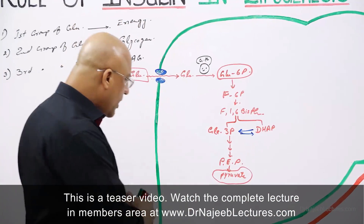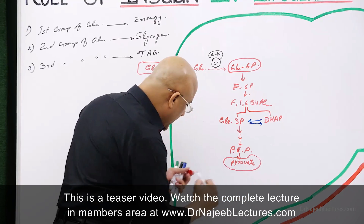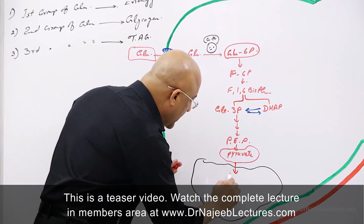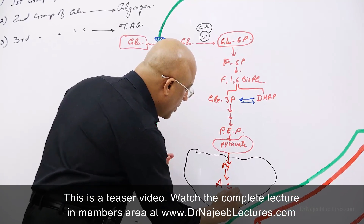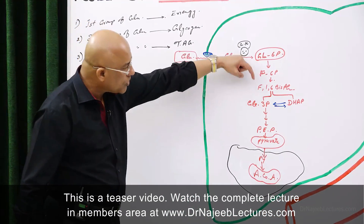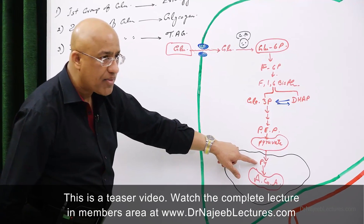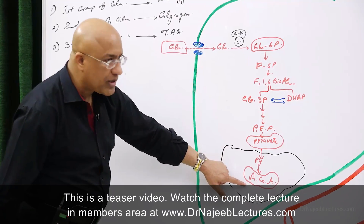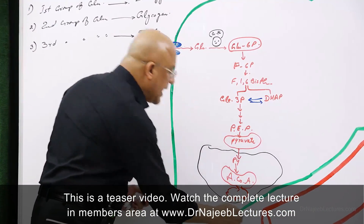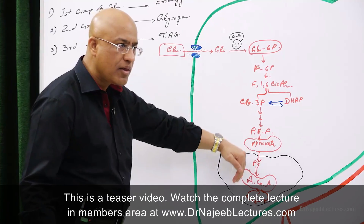We have reached the generation of pyruvate. This pyruvate will further enter into the mitochondria. In the mitochondria, pyruvate will convert into acetyl-CoA. Glucose enters, passes through the glycolytic pathway, ending up as pyruvate. Then glycolysis ends, and pyruvate is taken up by the mitochondria. Inside the mitochondria, pyruvate is converted into acetyl-CoA, which passes through the citric acid cycle and electron transport chain, eventually generating energy. This is what happens to the first group of glucose molecules.